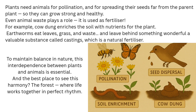Earthworms eat leaves, grass, and waste, and leave behind something wonderful — a valuable substance called castings, which is a natural fertilizer. To maintain balance in nature, this interdependence between plants and animals is essential. And the best place to see this harmony is the forest, where life works together in perfect rhythm.